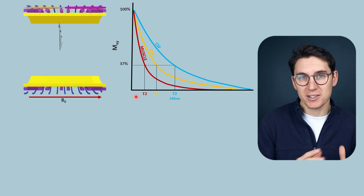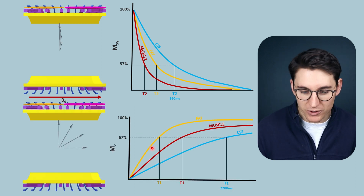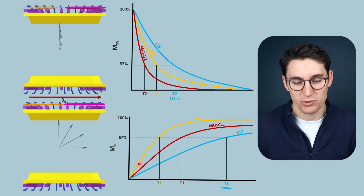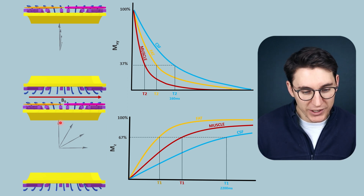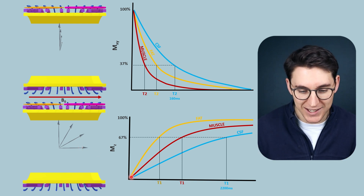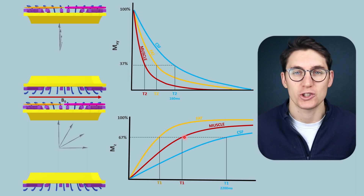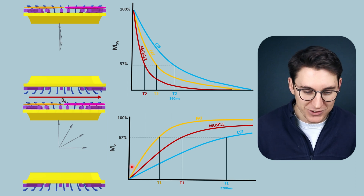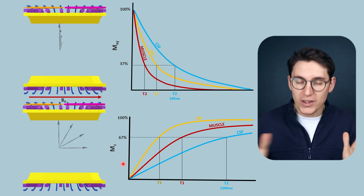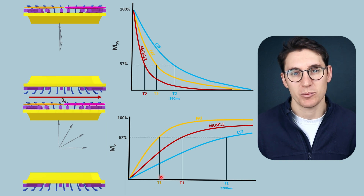The second independent but simultaneous process is T1 relaxation — longitudinal recovery, or spin-lattice relaxation. Here we get recovery of the longitudinal magnetization vector, and again that recovery happens at different rates depending on the tissue. The amount of time it takes to regain 67% of that longitudinal magnetization vector is the T1 time constant.